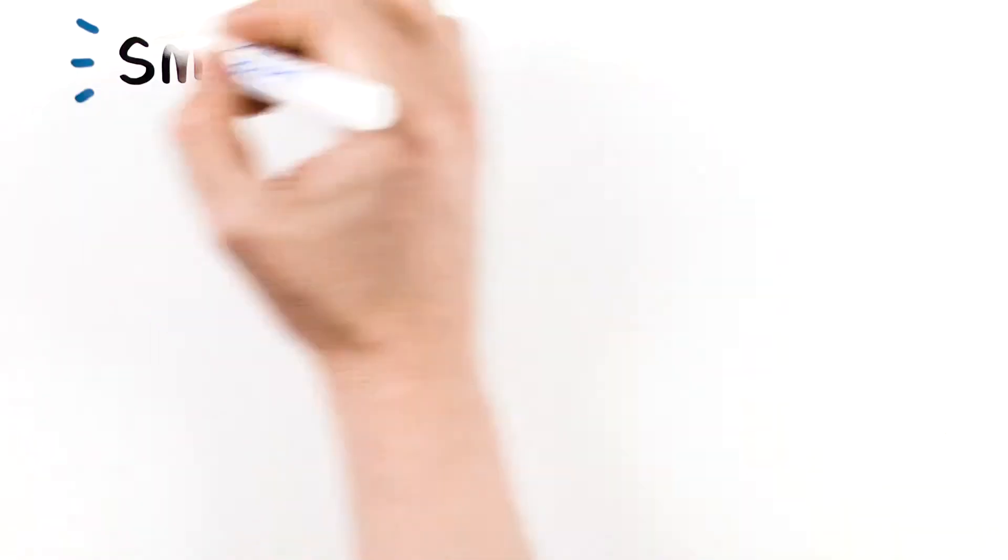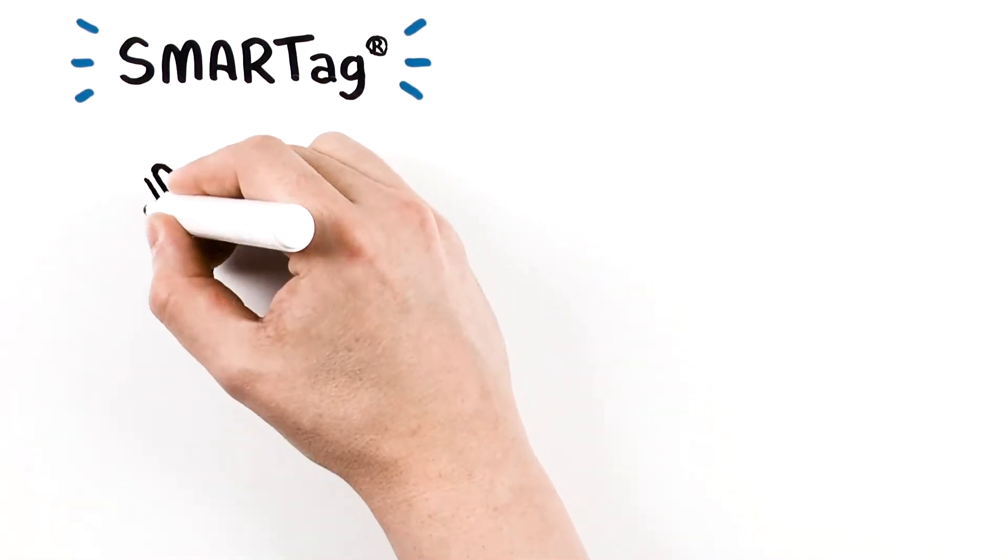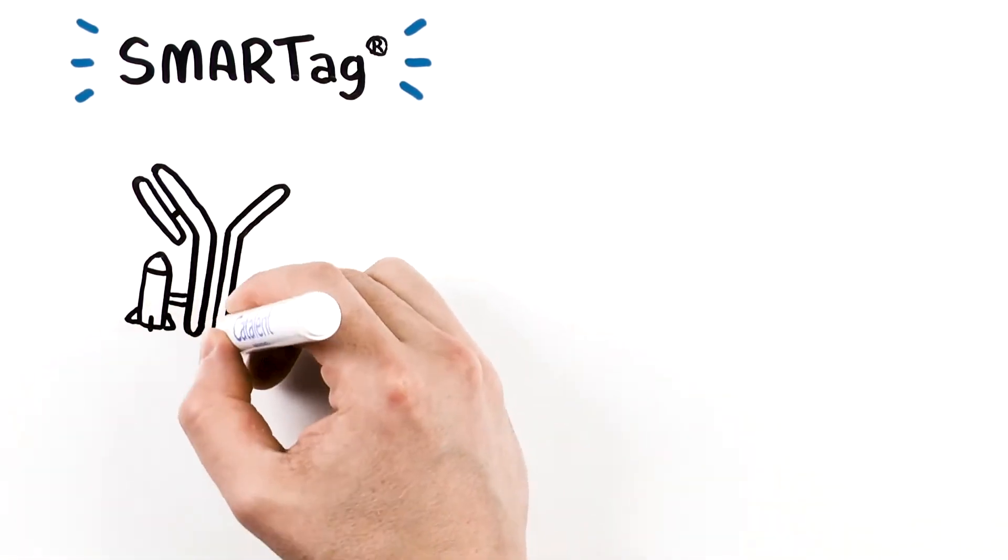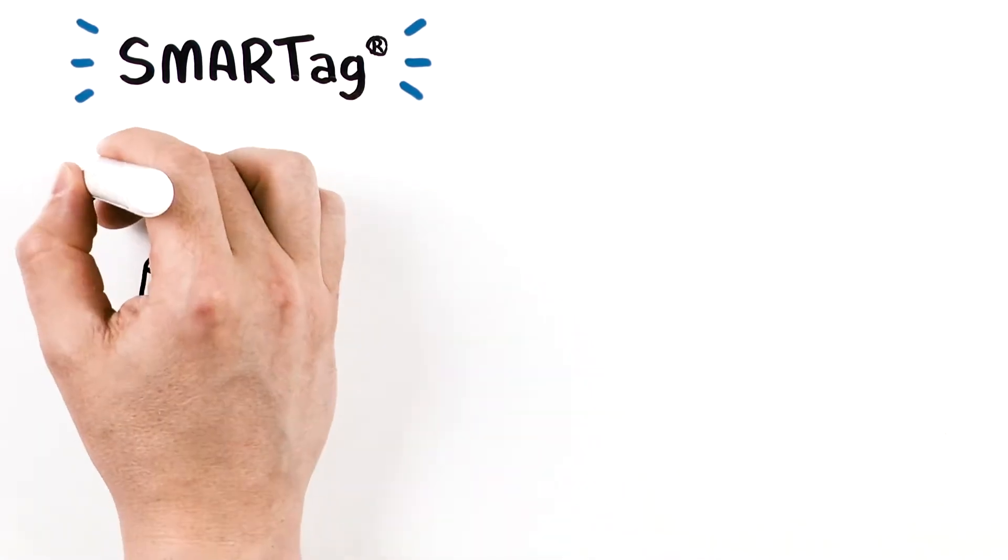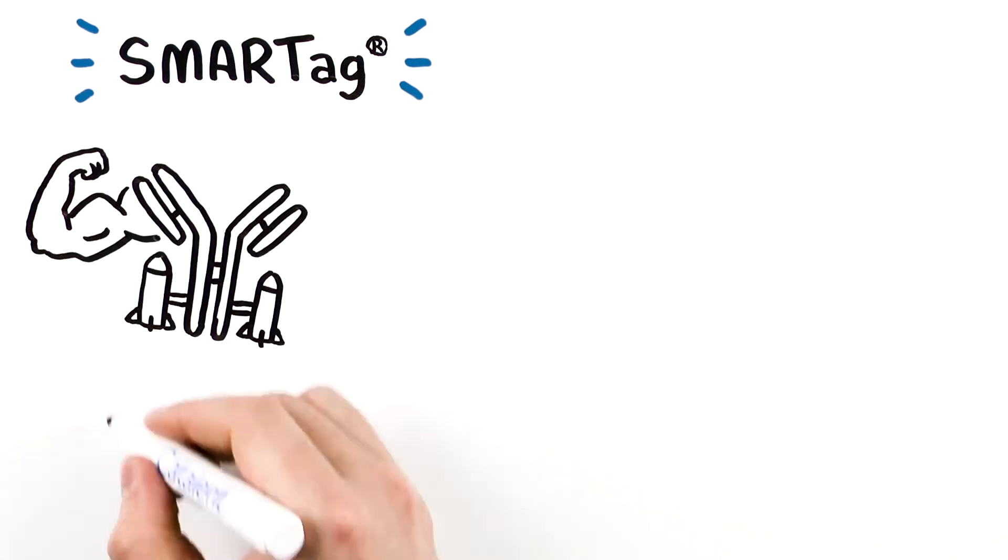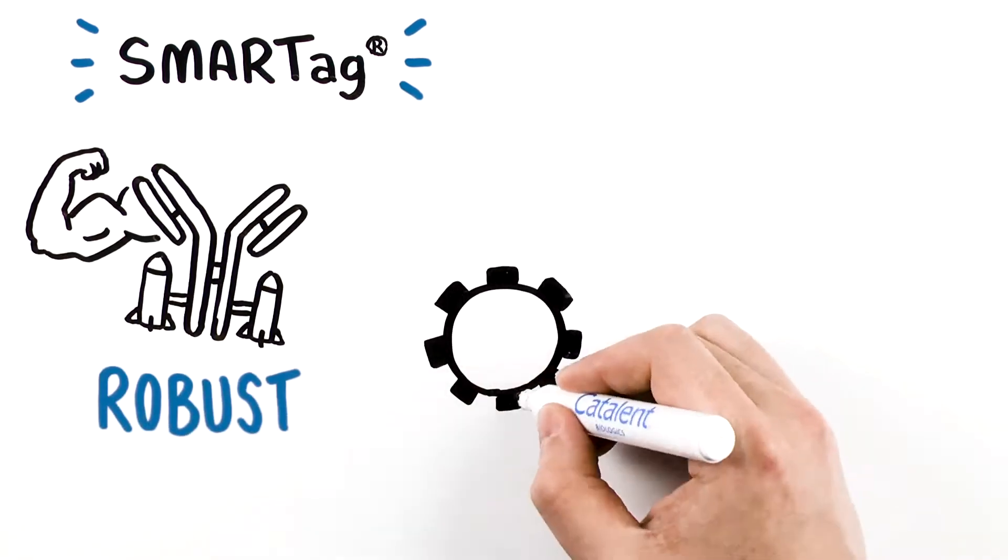Catalent's Smart TAG technology is a proven approach for generating site-specific conjugates based on an aldehyde tag. Unlike other site-specific technologies, Smart TAG is highly robust and manufacturable.